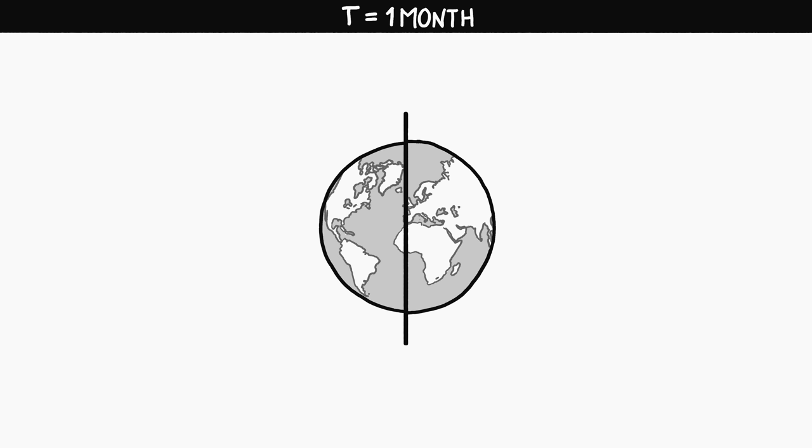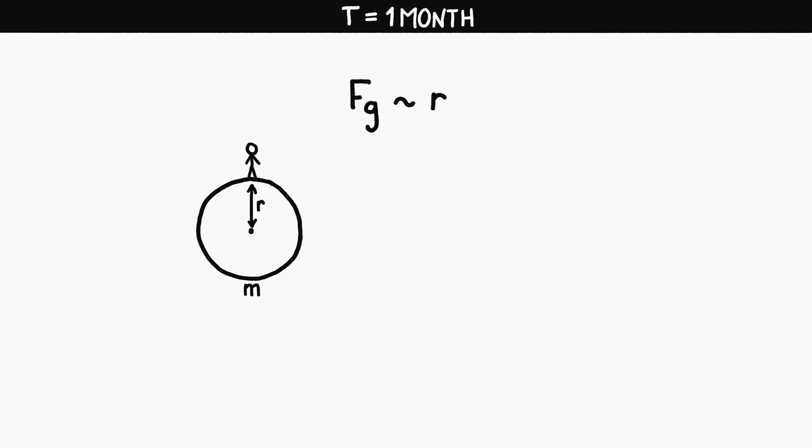After a month, the earth would have expanded by 26 kilometers, an increase of 0.4 percent. Surface gravity would also only have gone up 0.4 percent, even though the earth's mass would have increased by 1.2 percent. Surface gravity is proportional to radius, which is because as the planet grows, it gets more massive, but you also get further away from the middle.